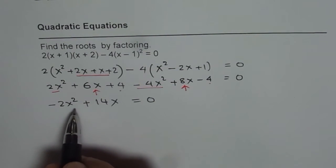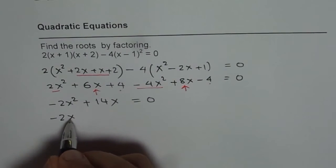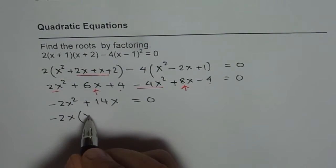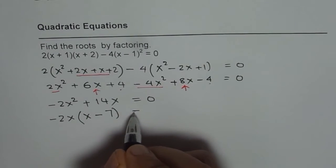Now we can factor. Let us factor -2x. So if you factor -2x, you get -2x(x - 7) = 0.